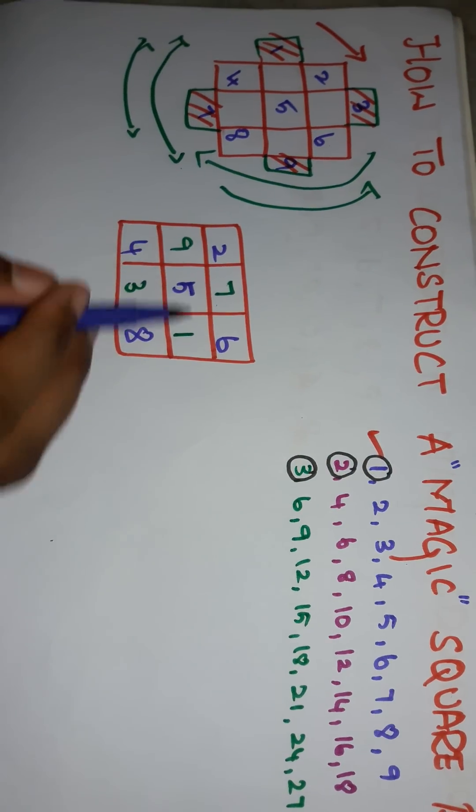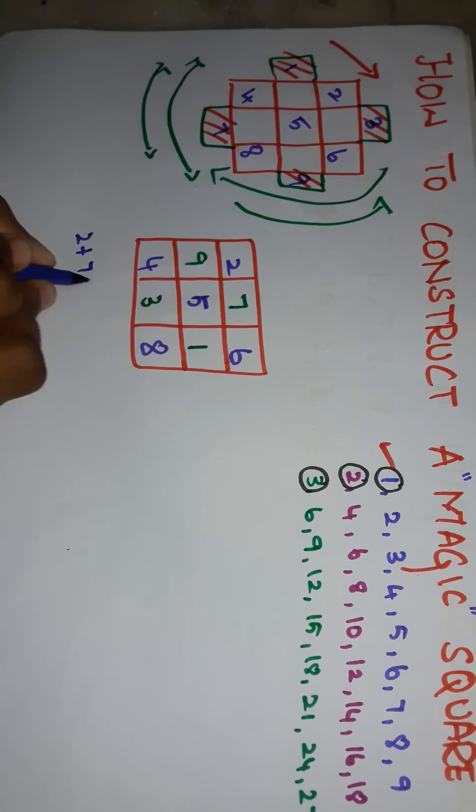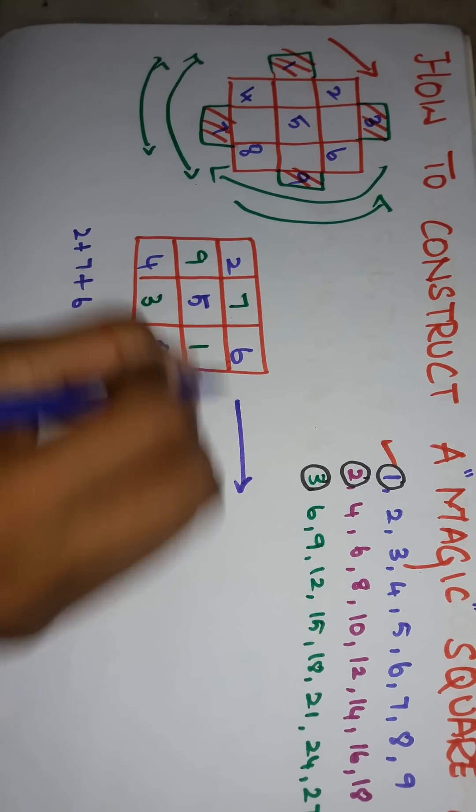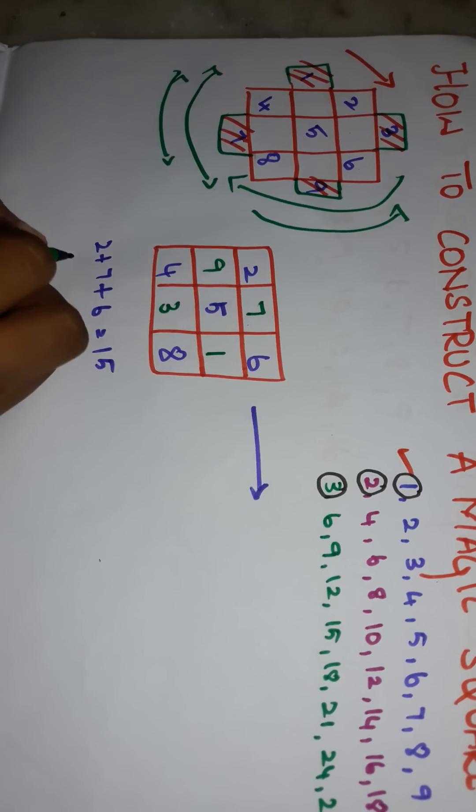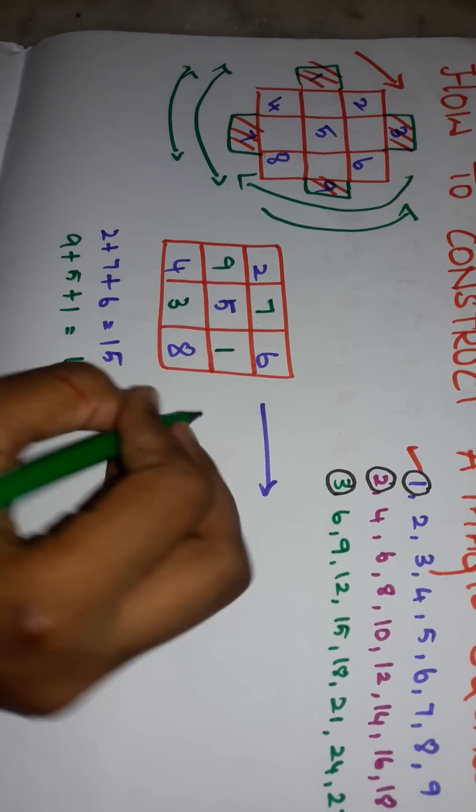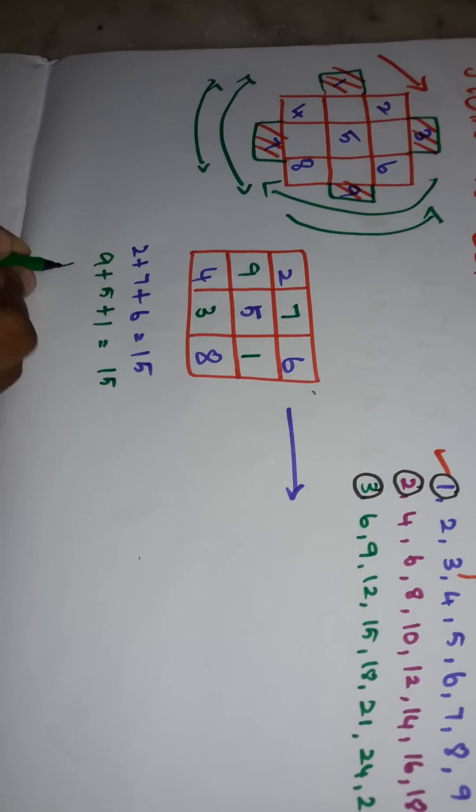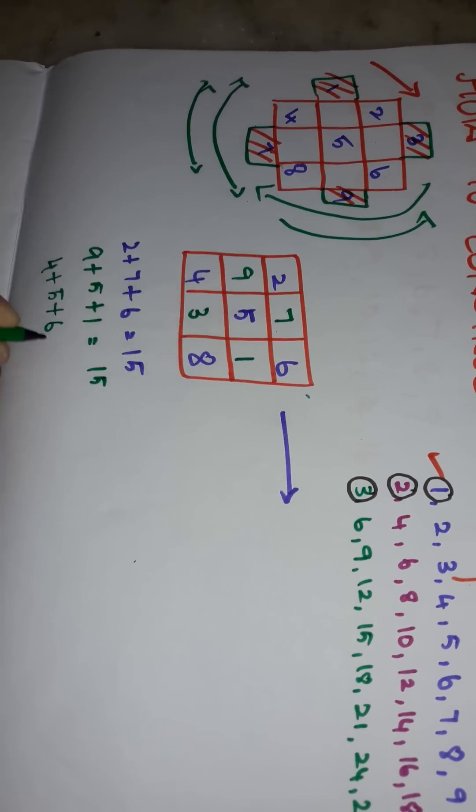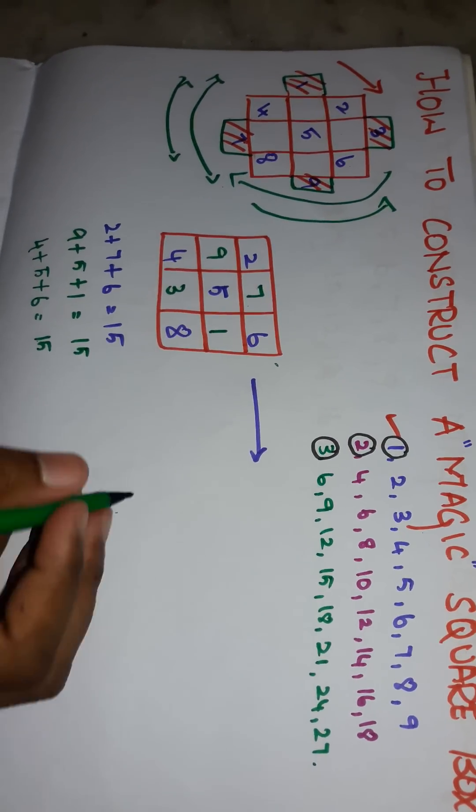You can add these numbers in any direction. The answer will be the same. If you have added 2 plus 7 plus 6 in this direction, the answer will be 15. If you have added like this, the answer will be the same. If you have added like this, the answer also will be the same.